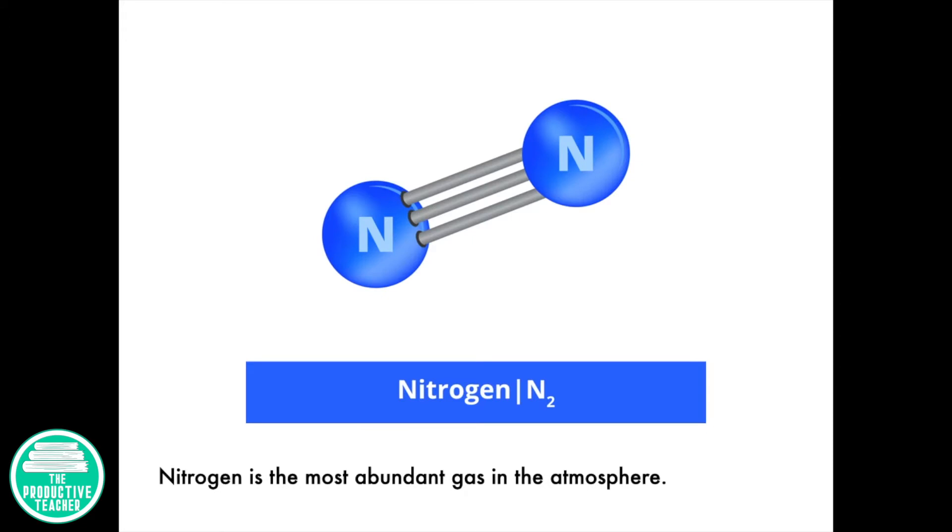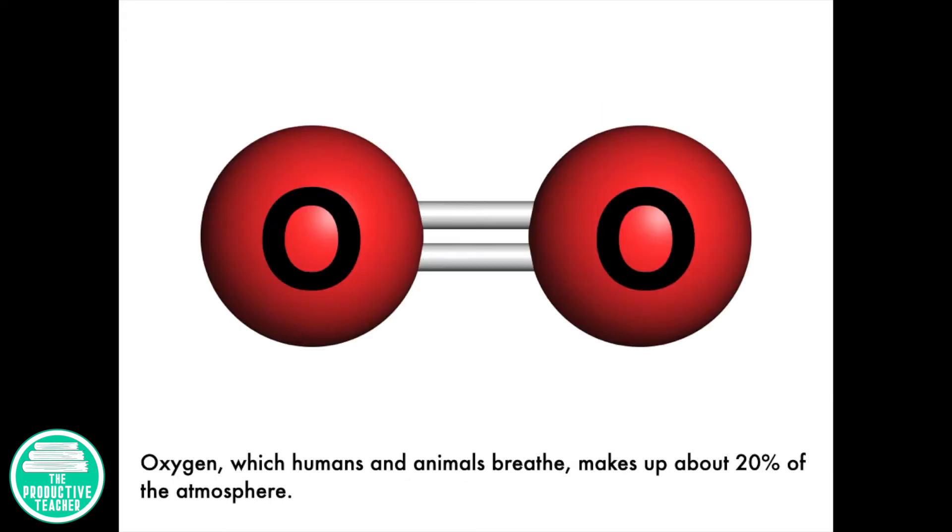Nitrogen is the most abundant gas in the atmosphere. Oxygen, which humans and animals breathe, makes up about 20% of the atmosphere.